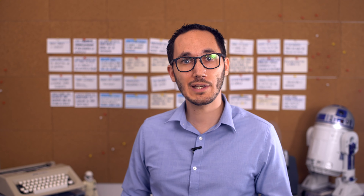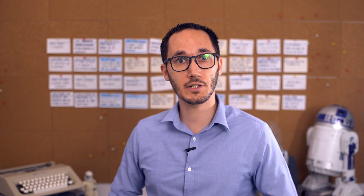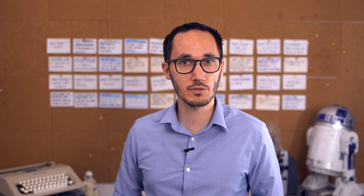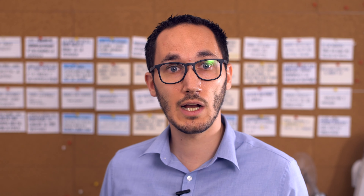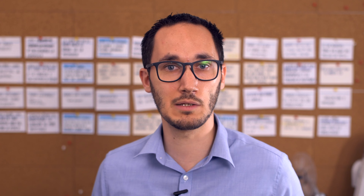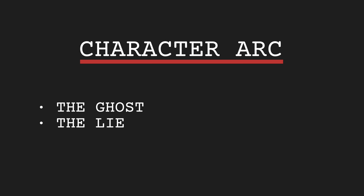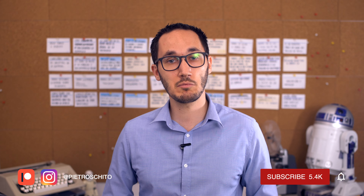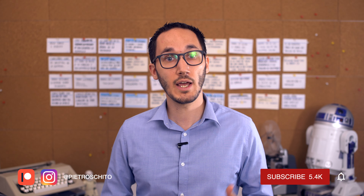Do you want to discover how to create a powerful character arc for your protagonist but have no idea where to start? In this video you'll learn how to achieve just that by working on three simple elements: the ghost, the lie, and the truth. I'm screenwriter Pietro Schieto and this is Rai4Animation. If you want to become a successful animation screenwriter, hit the subscribe button and the bell to get notified when I post a new video.